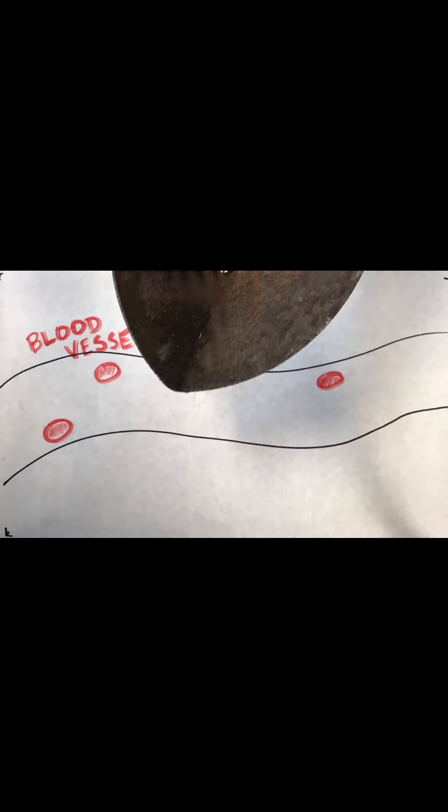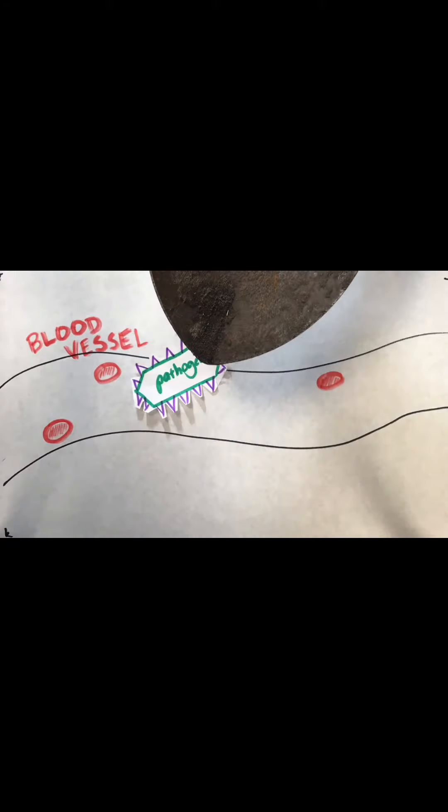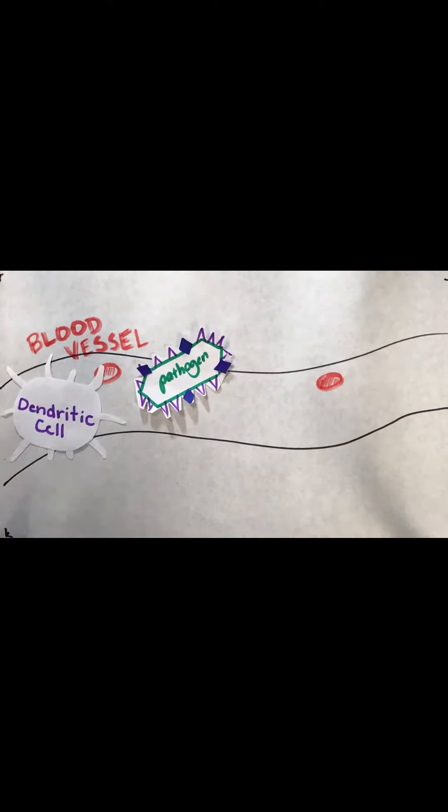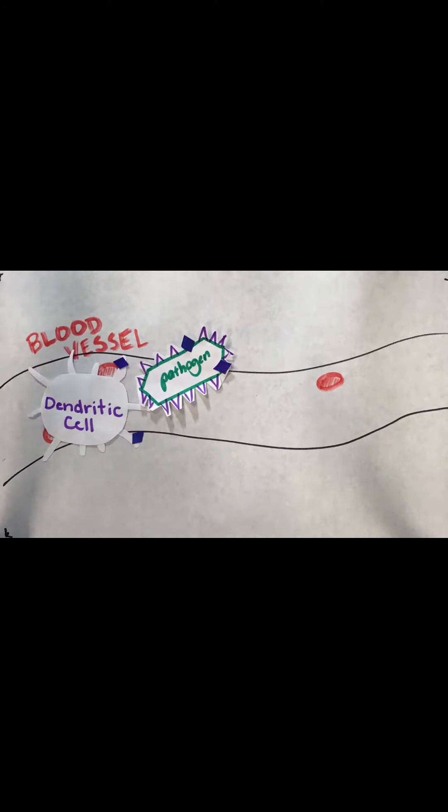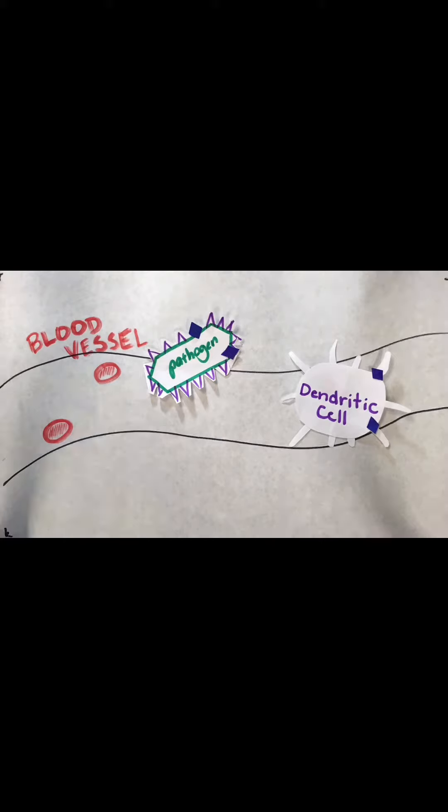In the adaptive immune response, a specific type of pathogen is introduced inside the body, and the dendritic cell will come in and pick up the antigen proteins on the surface of the pathogen